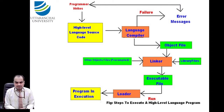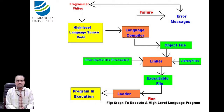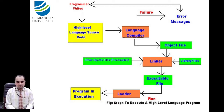To execute a high-level programming language, general programmers follow a flowchart where high-level language source code is provided to the language compiler. The compiler generates an object file, which is then connected to the linker and loader. After completion of this process, the program will be executed.